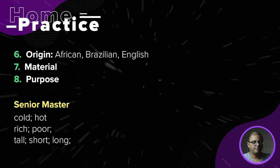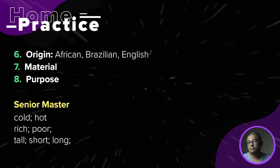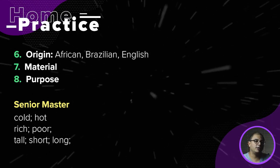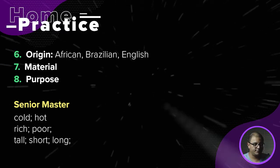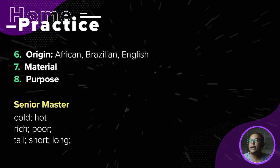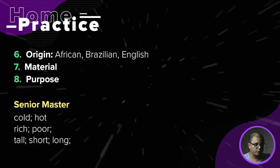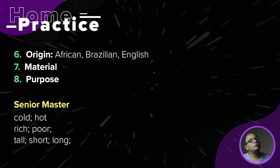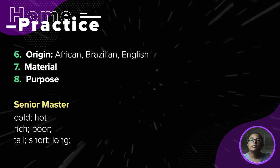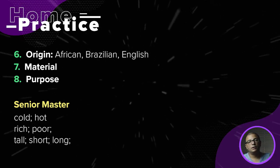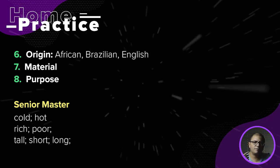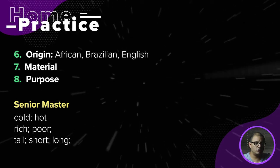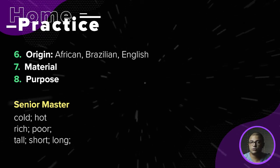Besides that, you also have to mention how many adjectives you can use to describe the Titanic. For example: cold — the antonym would be hot; rich — the antonym would be poor; tall — the antonym would be short; short — the antonym would be long. We have many others, but we'll use just these as examples.